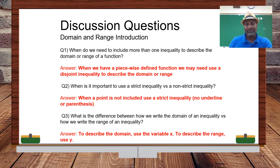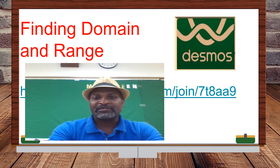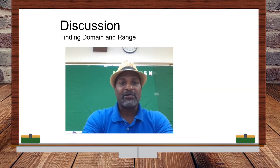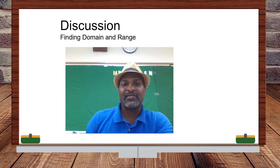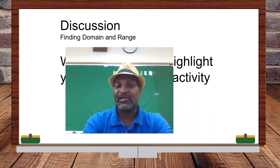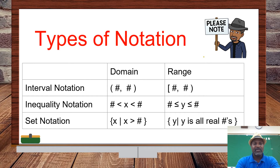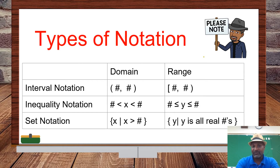If you have not already done so, go through the finding domain and range activity using the link in your one-pager. Now let's summarize all three types of notation. Interval notation is probably the easiest to use — you simply write the endpoints in parentheses or brackets depending on whether they are included or not, and you do the same for the range.